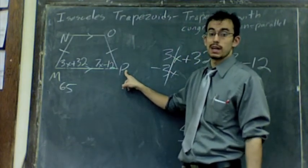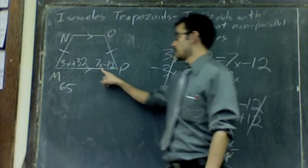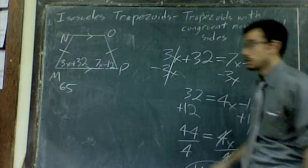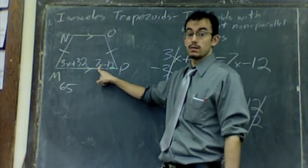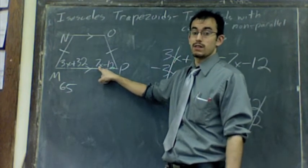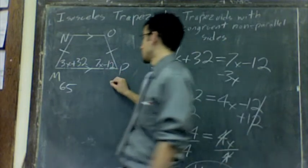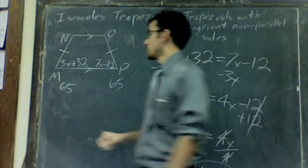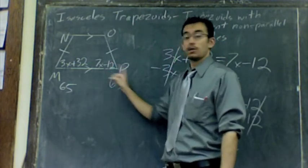Angle P should be the same thing. Let's make sure. 7 times X or 7 times 11, 7 times 11, that's 77. 77 minus 12, that's 65. So we did this correctly. Both angle M and angle P are both 65.